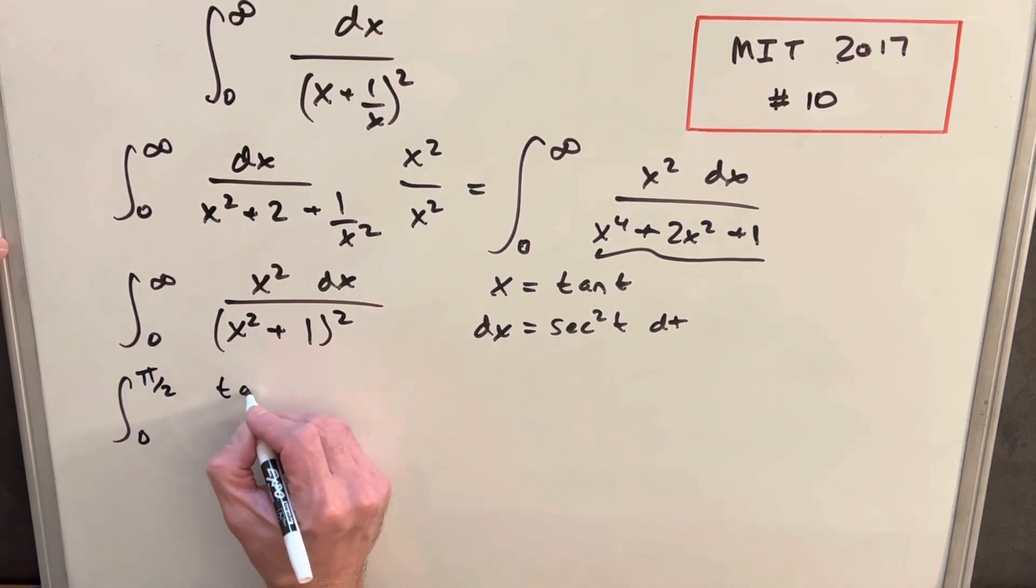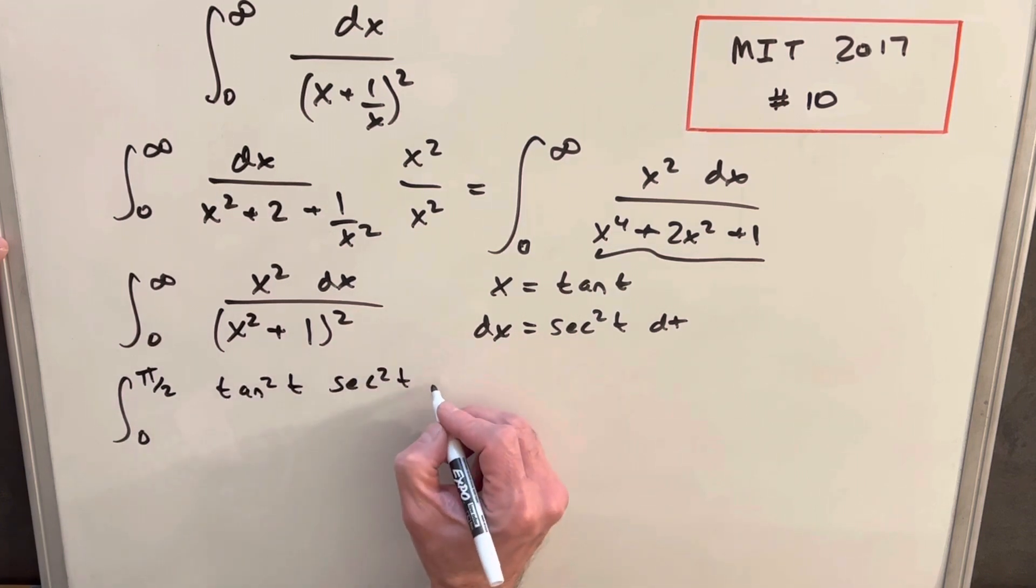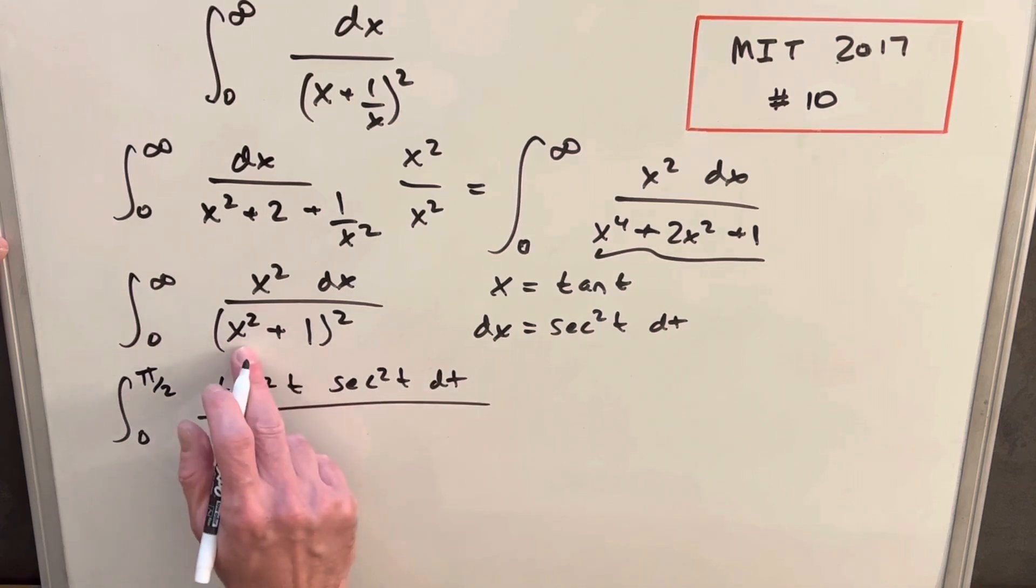And for x squared, we're going to have tan squared t in the numerator, dx we're going to plug in our secant squared t dt. Now x squared plus 1 is tan squared plus 1, which is the same as secant squared. So we're going to have secant squared all squared.